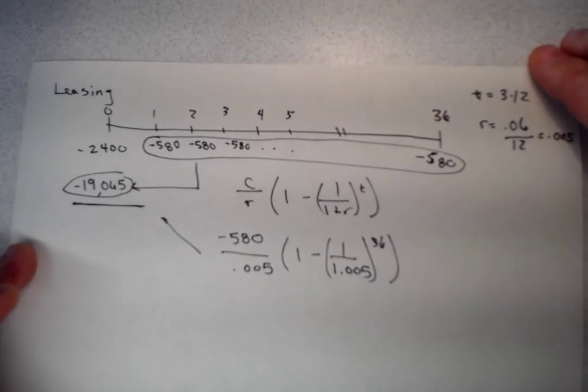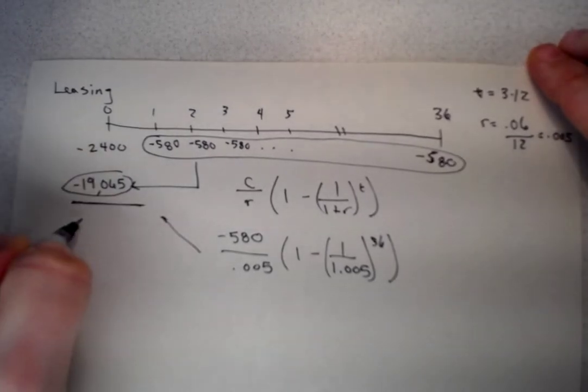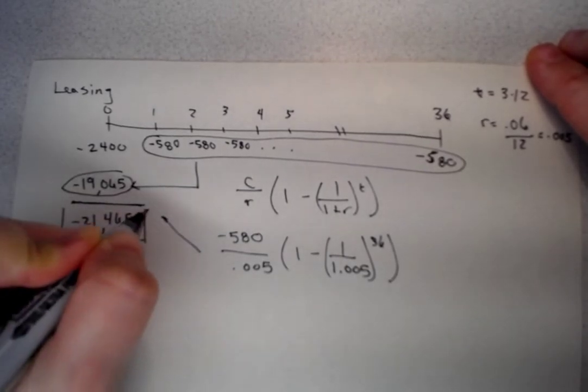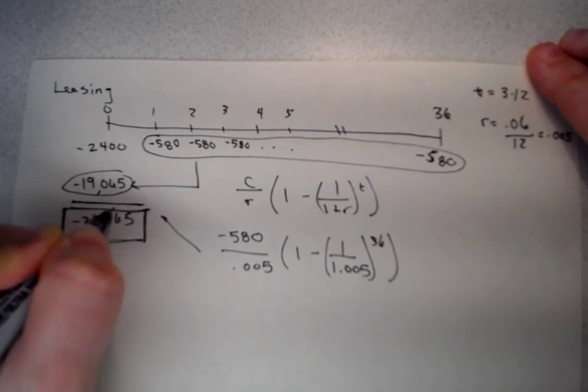That's the present value of the lease payments. When you add that up, you're going to get minus 21,465, which is the present value of leasing the car.